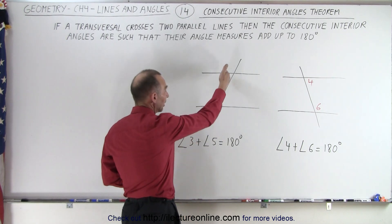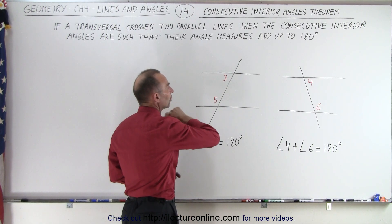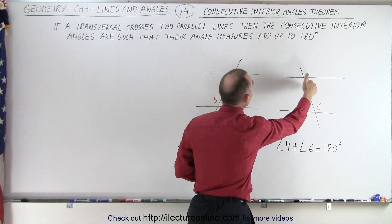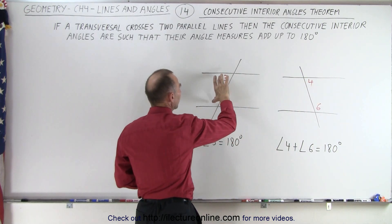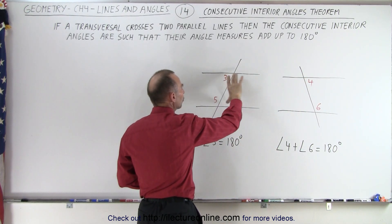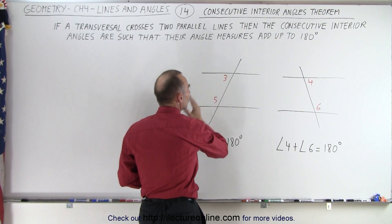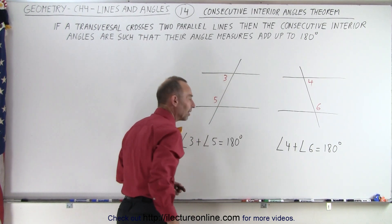You can clearly see that these are two pairs of consecutive interior angles. They're interior because they're inside the two parallel lines, and they're on the same side of the transversal, so they're consecutive angles.